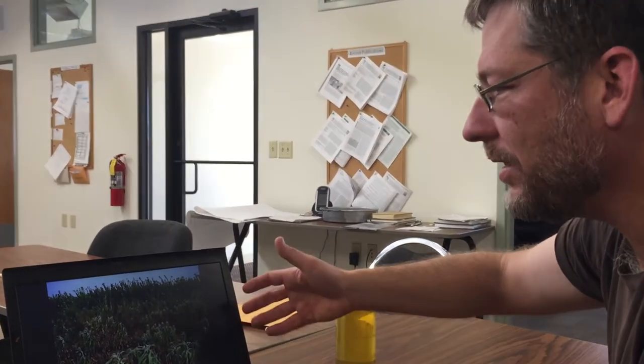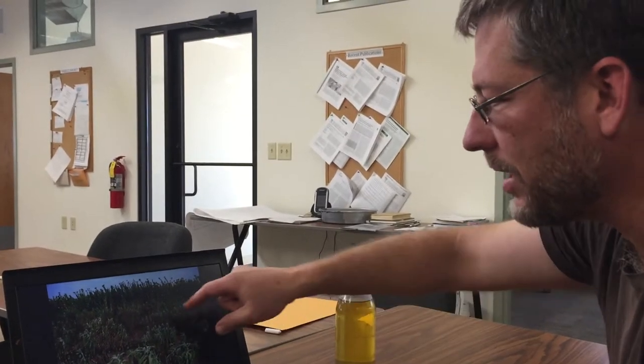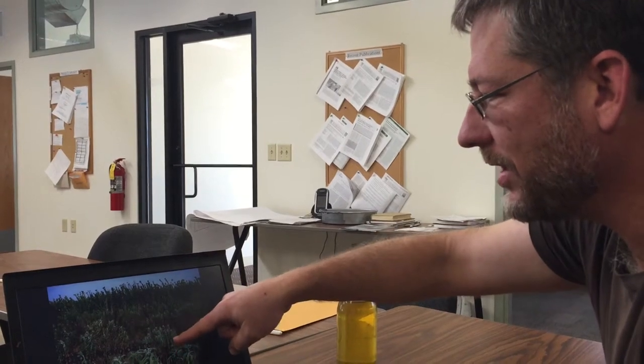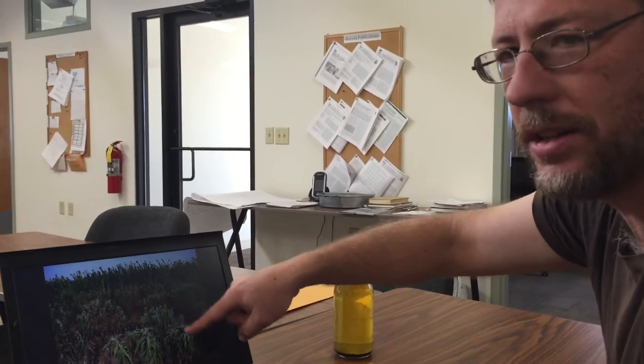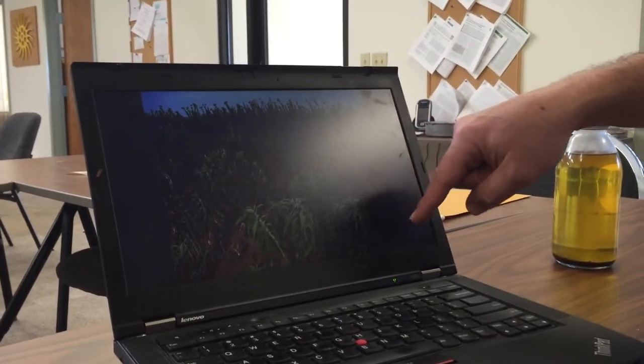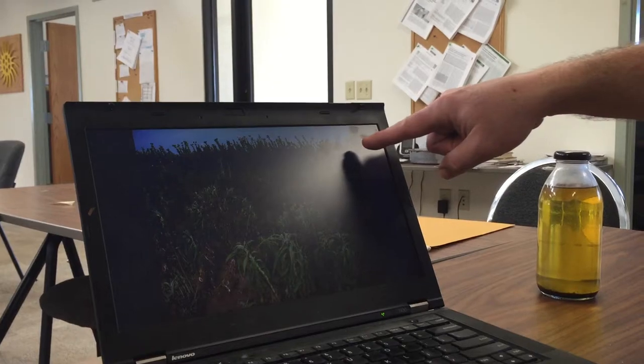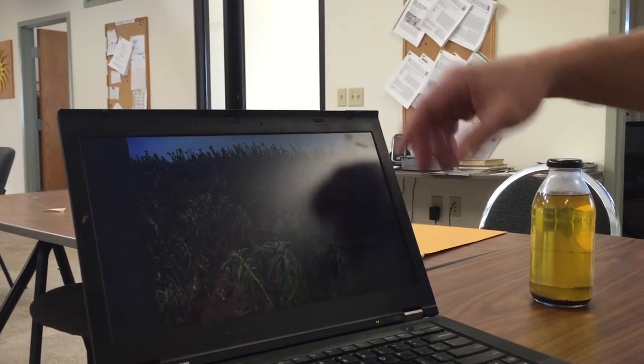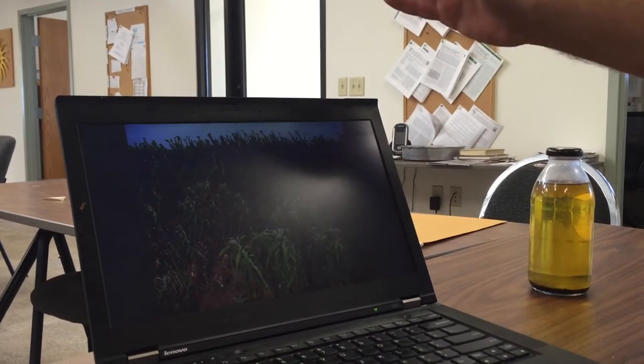So everything about these is pretty much the same, except this species during this drought is very wilted. The plants are very stunted. The leaves are curled and kind of gray looking. And the Silphium looks bright green. They're flowering normally. They got much larger.